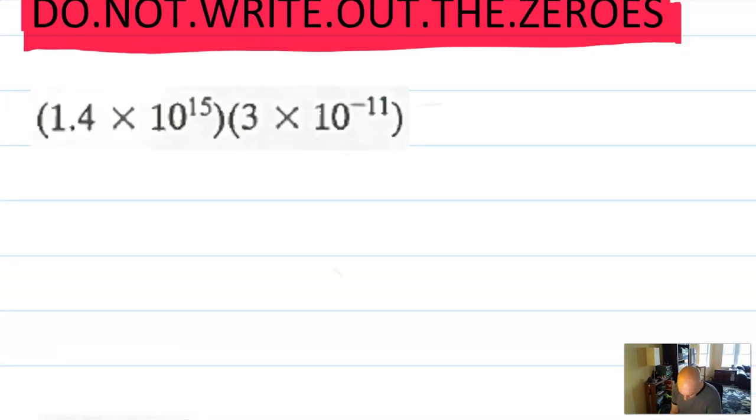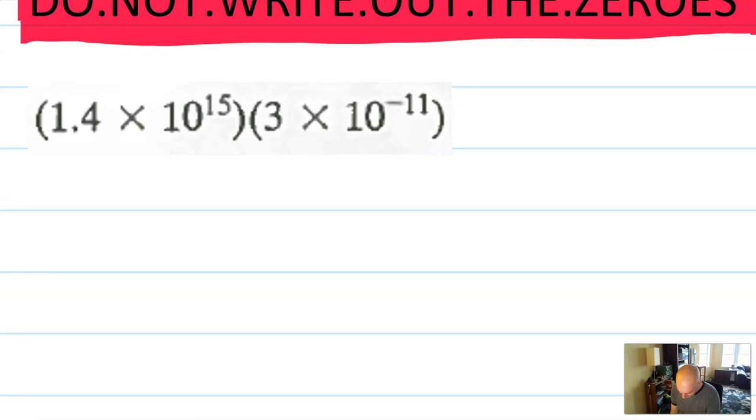But here's how you do problems like this. We have 1.4 times 10 to the 15th. We'll do a bunch of these. Times 10 to the 15th. Times 3. Times 10 to the negative 11th. Now, we write this times as the x, and here there's nothing in between. Remember, this is also a time sign. And multiplication is that thing we call associative and commutative. So you can group these numbers in a much smarter way. How about 1.4 times 3 times 10 to the 15th times 10 to the minus 11th?